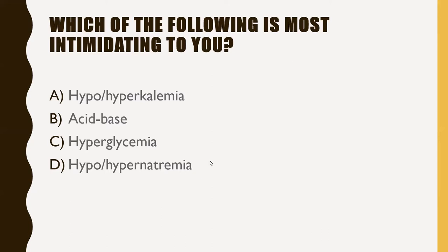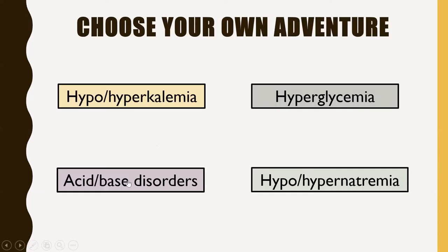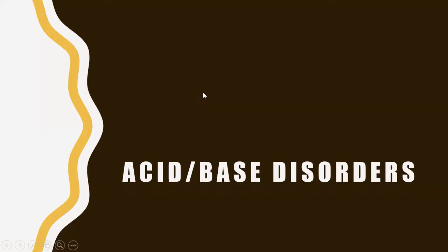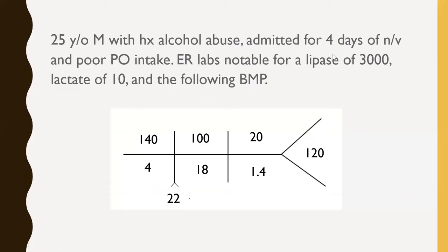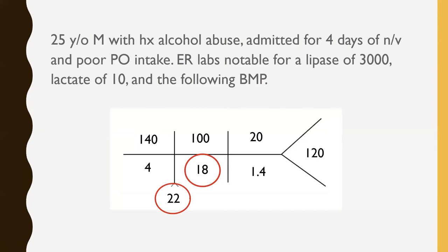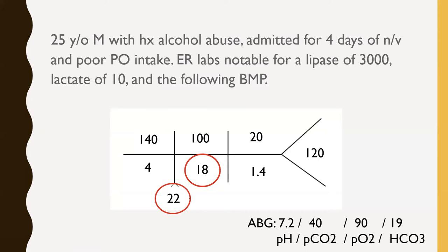Let's start with acid-base, then do hyponatremia, and see where we get from there. We have a case: a 25-year-old male with a history of alcohol abuse admitted for four days of nausea, vomiting, and poor PO intake. His labs in the emergency department were notable for a lipase of 3000, a lactate of 10, and the BMP shown here. You also have an ABG ordered — something you'll want to commit to memory.